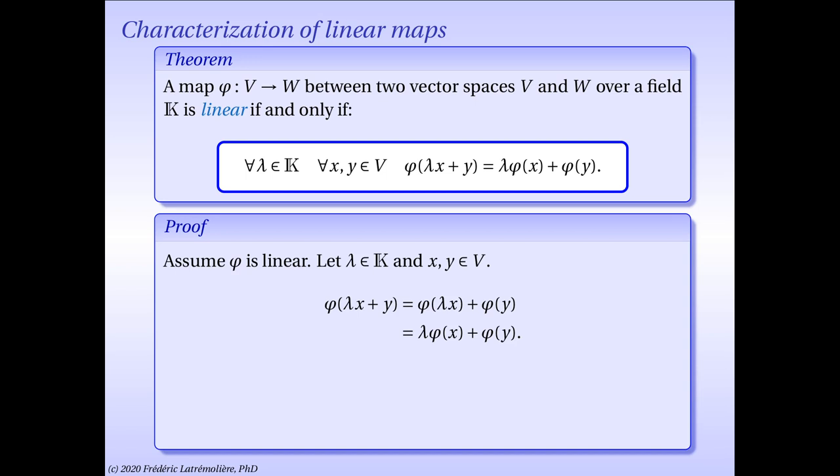First, let us assume phi is linear and prove the highlighted property in the theorem. Let lambda be a scalar and x and y be two vectors in V. Phi of lambda x plus y is equal to phi of lambda x plus phi of y, since phi is linear and therefore additive. Now, again because phi is linear, phi of lambda x equals lambda times phi of x. We have thus proven that any linear map must satisfy the highlighted property.